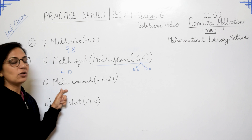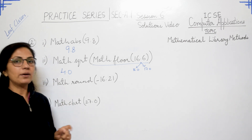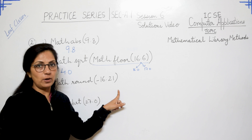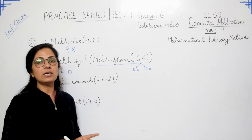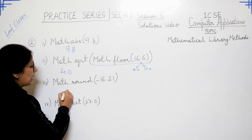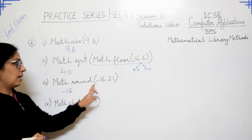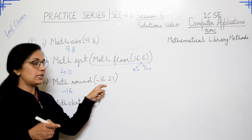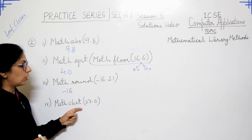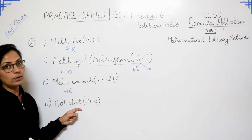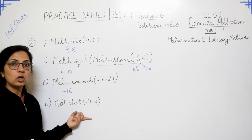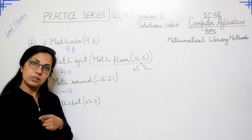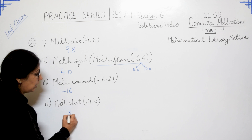Part three: Math.round. This function returns the rounded value. For negative numbers, if the fractional part is from 0 to 0.5 (both inclusive), the same integer value is returned; otherwise the next integer value is returned. So the answer is -16, since 0.21 is within the range 0 to 0.5. Part four: Math.cbrt. The cbrt function also returns a double type value and it stands for cube root. The cube root of 27.0 is 3.0, since 3 × 3 × 3 = 27. So the answer is 3.0.